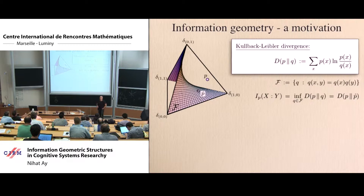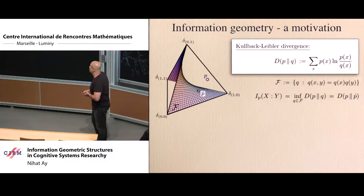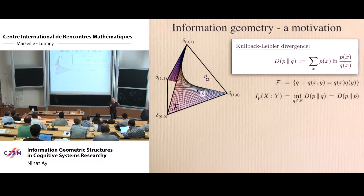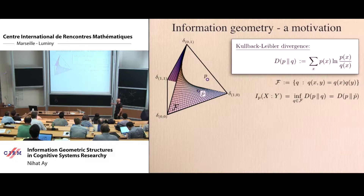This is essentially a motivation of information geometry and its main structures. I started with information geometry by studying a very simple example: two binary nodes with states 0 and 1. I considered the product space and the simplex of all probability distributions on that product space, with extreme points given by the Dirac measures delta(0,0), delta(1,1), delta(1,0), delta(0,1).